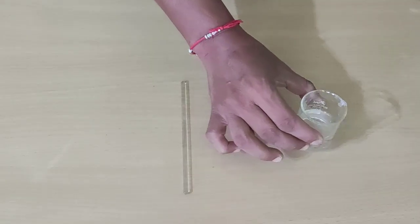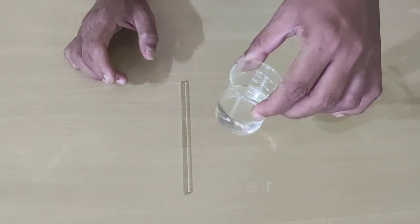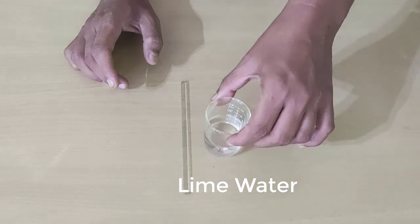Now you can see we have got a colorless lime water solution after filtering through a filter paper.